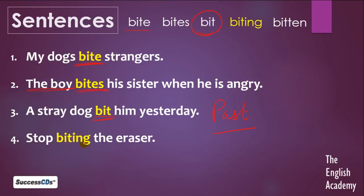Next sentence is: 'Stop biting the eraser.' Eraser ko kaatna band karo. Yahaan par sentence mein action ki continuity dekhne ko mil rahi hai — biting, yani ke action abhi chal raha hai. And so humne ing yani present participle form use kiya hai — biting.